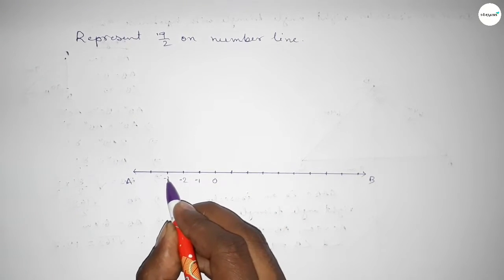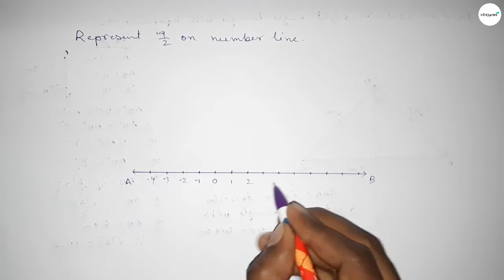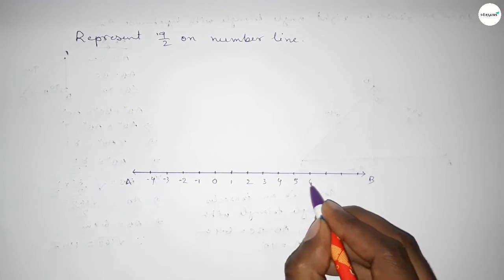Okay, now taking here starting 0, this side minus 1, minus 2, minus 3, and minus 4, and this side 1, 2, 3, 4, 5, 6, 7, 8, 9.